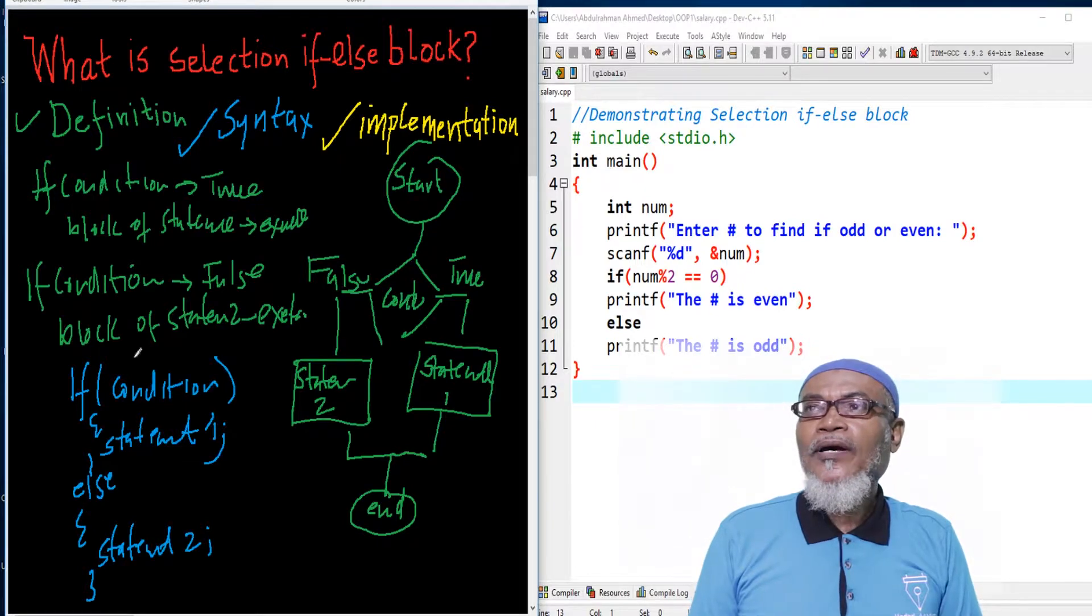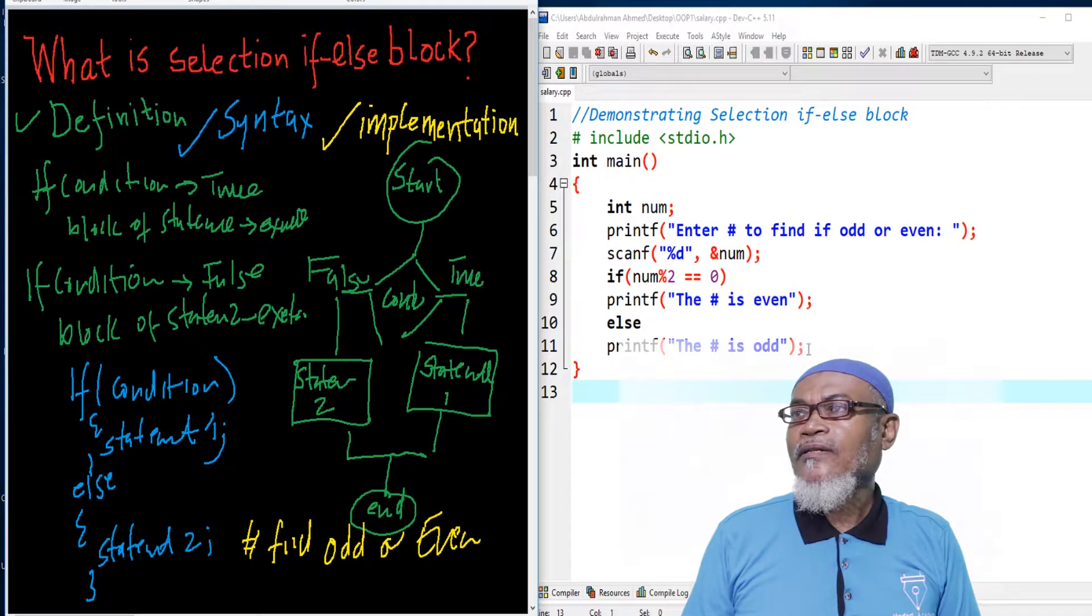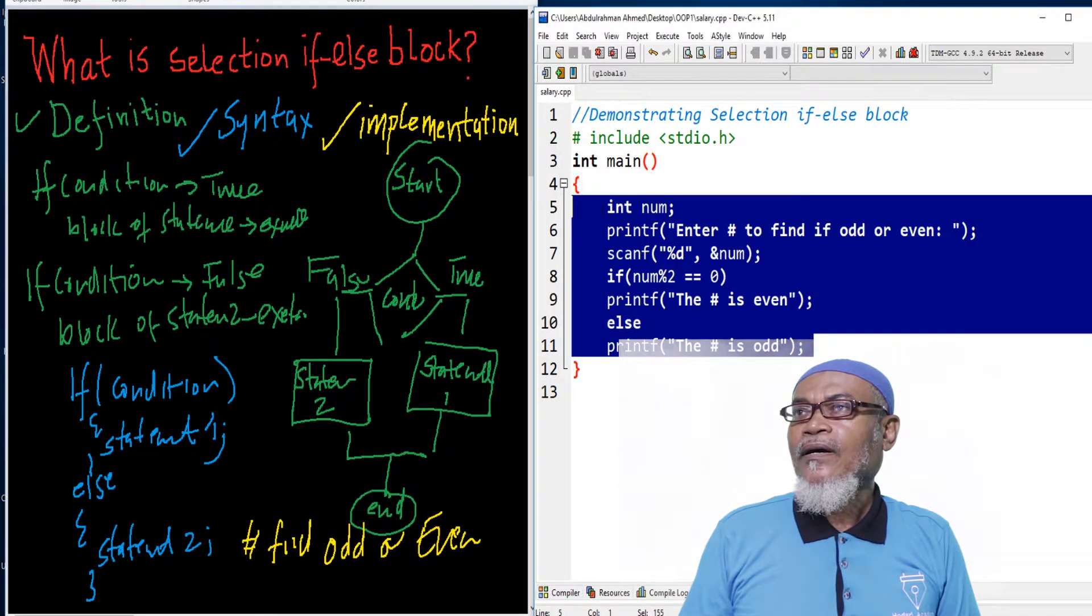How are we going to implement this particular selection if-else block? We're going to ask a user to enter a number and find out if it is odd or even. So let's go to Dev C++ and see how we can do that.